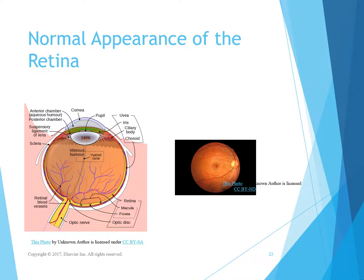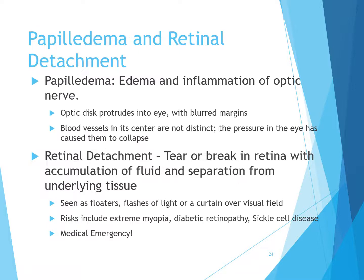In the normal retina, the optic nerve enters at the optic disc, and retinal arteries and veins are visible at the center of the optic disc. Retinal blood vessels are smooth with relatively straight paths, as you can see in the picture.